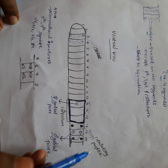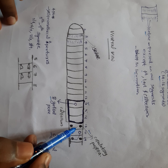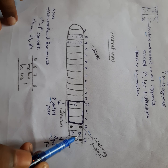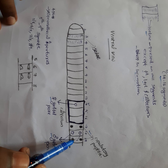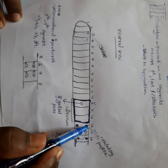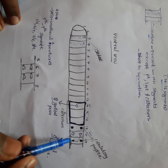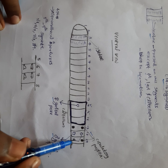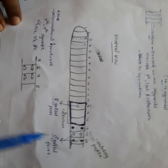One more structure is copulatory papillae. You can see two pairs of copulatory papillae on the 17th and 19th segments — one pair on the 17th and another pair on the 19th, making a total of four.